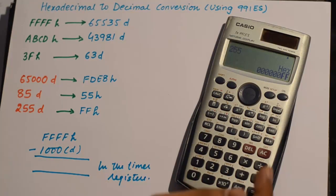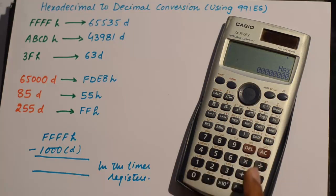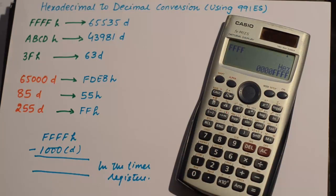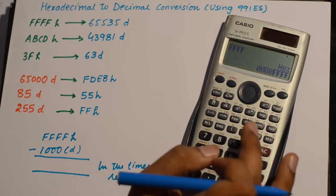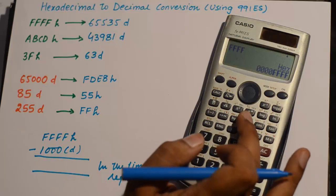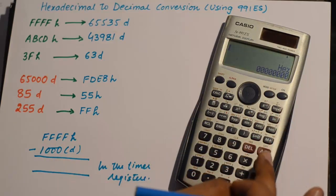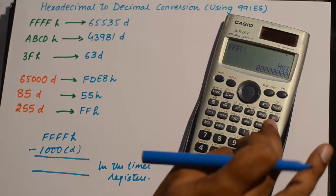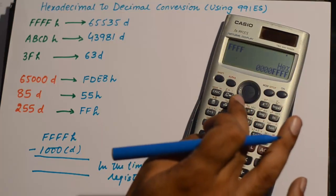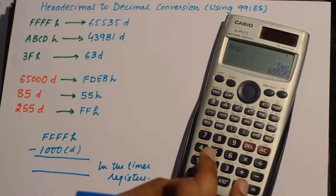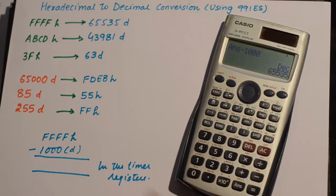This is again very simple. What you can do is type in your hexadecimal number, convert it into decimal, and then subtract your 1000 — which is a decimal number — from this decimal number.